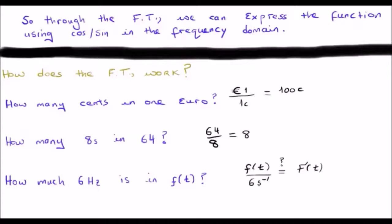How would you find out how many six hertz signals are there in your particular function, let's say, of time? Would you, for example, divide your function by six hertz?